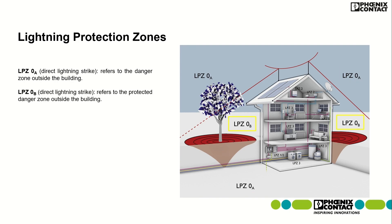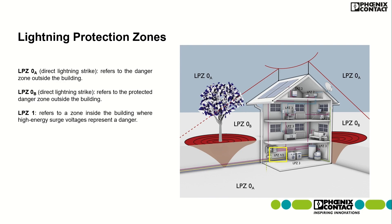Lightning protection zone 0B refers to the protected danger zone outside the building. Lightning protection zone 1 refers to a zone inside the building where high energy surge voltage represents a danger. Lightning protection zone 2 refers to a zone inside the building where low energy surge voltage represents a danger.